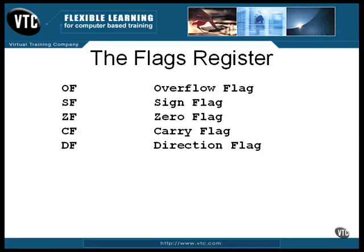The direction flag (DF) is different — it's one that you set to modify the way that certain instructions behave. One instruction can be used to copy a block of memory from one location to another. With the DF flag set, the copy will start at the highest memory location and proceed through to the lowest. If DF is not set, the same instruction will begin with the lowest memory location and loop through to the highest. You can see how this would matter if the two blocks overlap one another; otherwise, who cares?